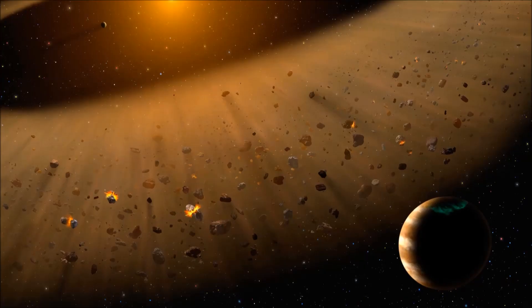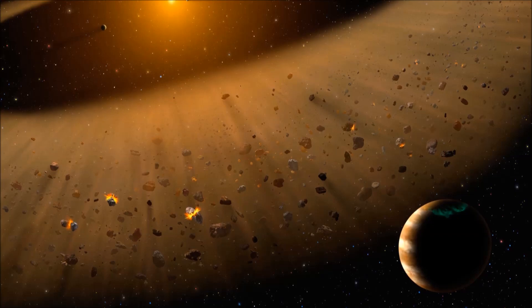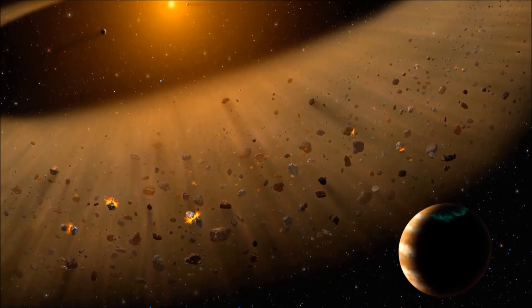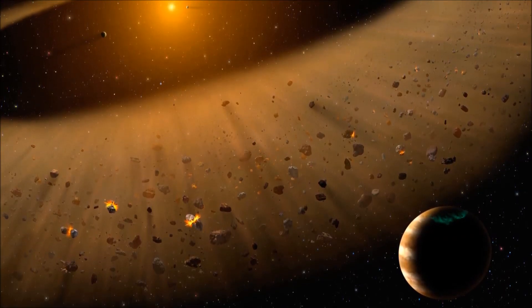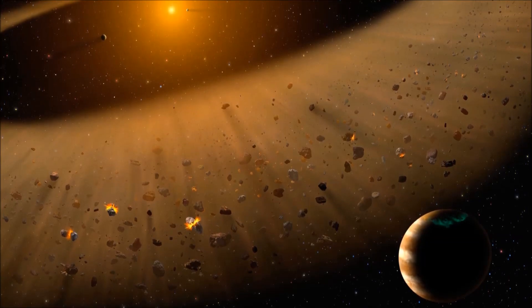Epsilon Eridani is a K-type star, slightly smaller and cooler than our sun, at a distance of 10.5 light years. This system is hugely important in two big sci-fi franchises, Babylon 5 and Halo.